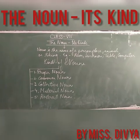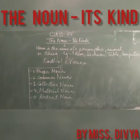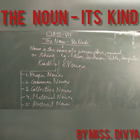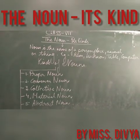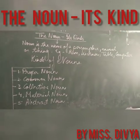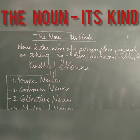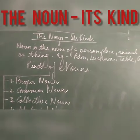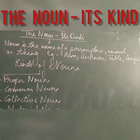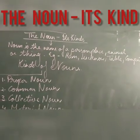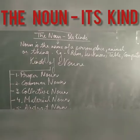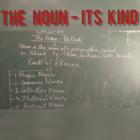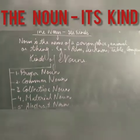Good morning class students, it's Sibya here. So, it's your chapter number 6, that is the noun and its kinds. What is noun? As you have already studied in your previous classes, noun is the name of a person, place, animal or thing. For example, Ram, Lucknow, table, computer, etc.